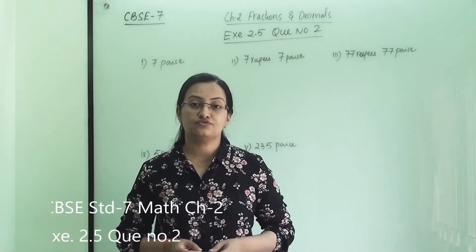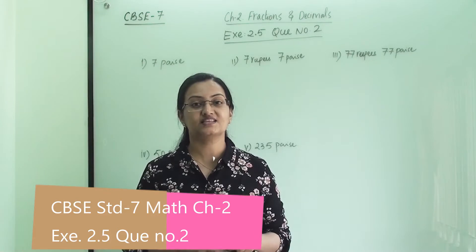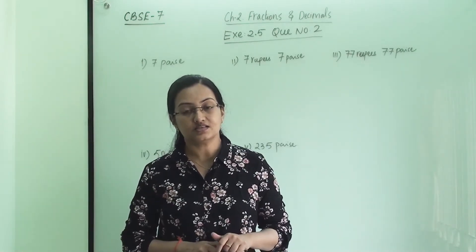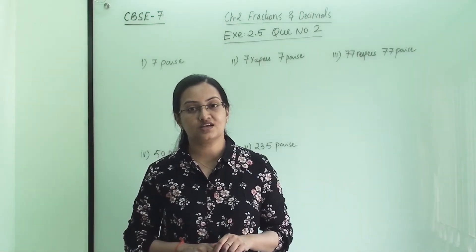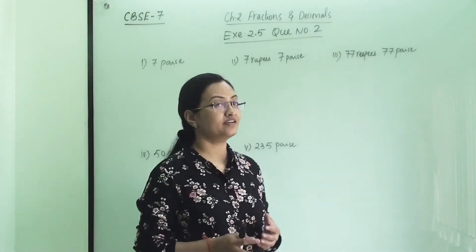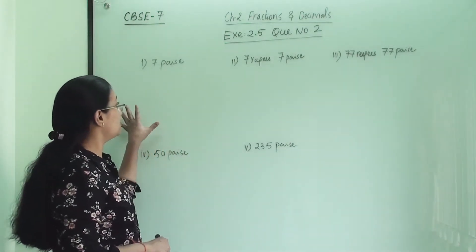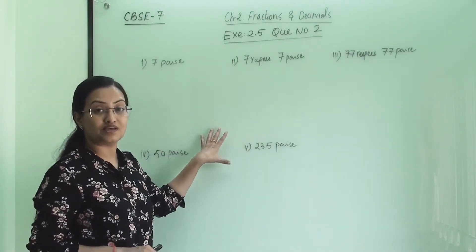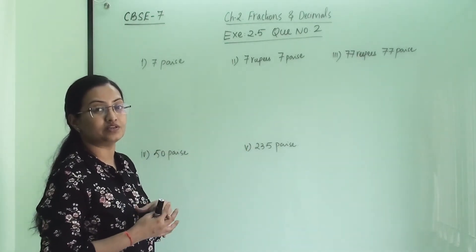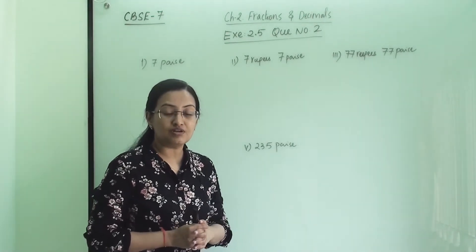Welcome to Learn Yourself. Today we are going to solve question number 2 from exercise 2.5. This exercise is under CBSE standard 7 syllabus from the chapter Fractions and Decimals. Here we have to convert rupees and paise to decimal form — we will convert them into decimal form.